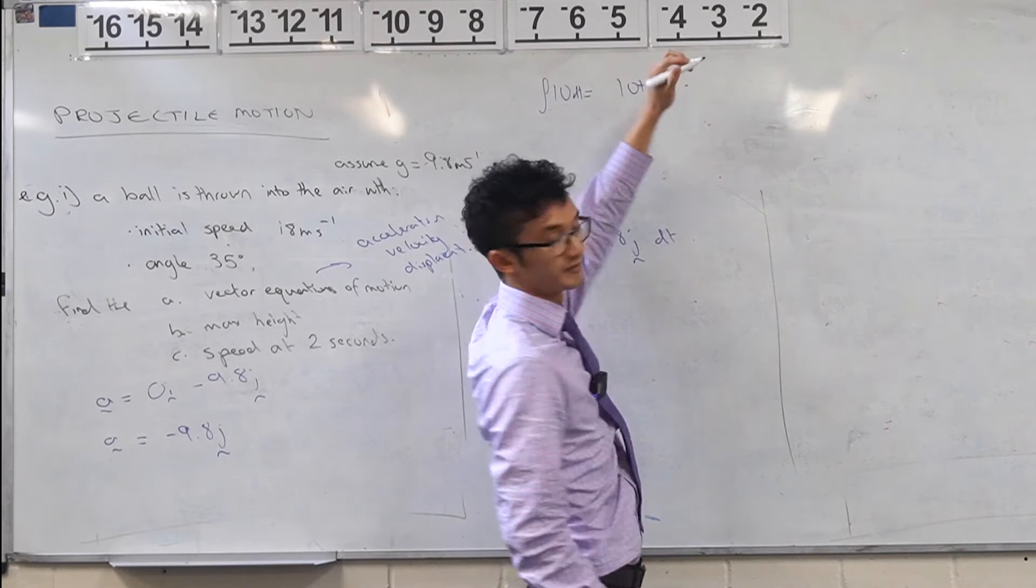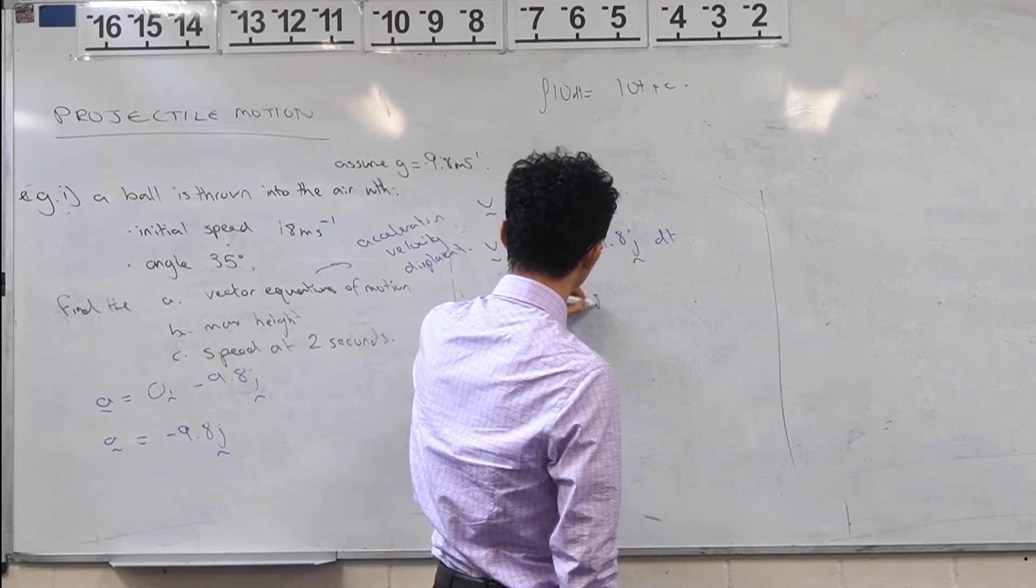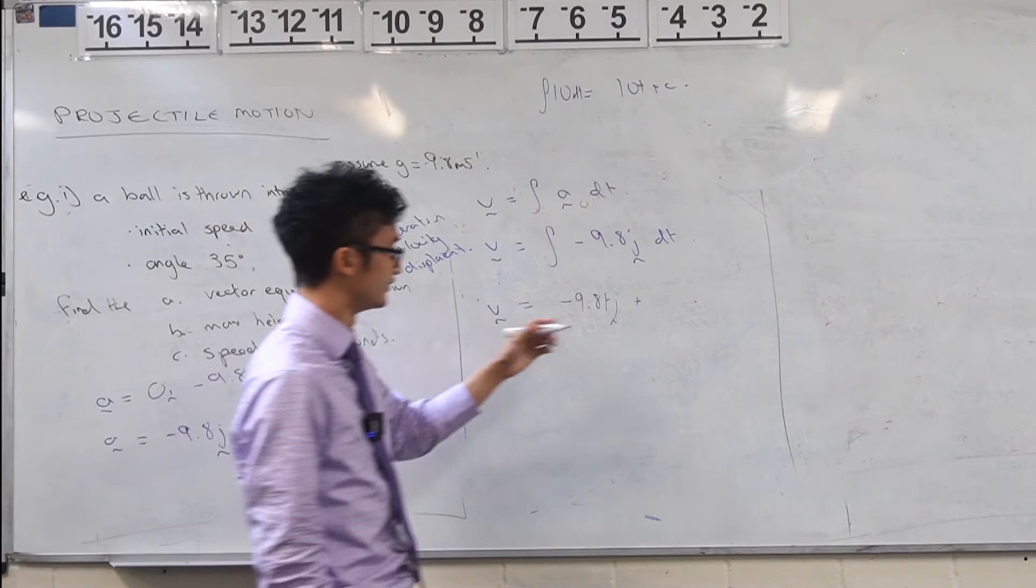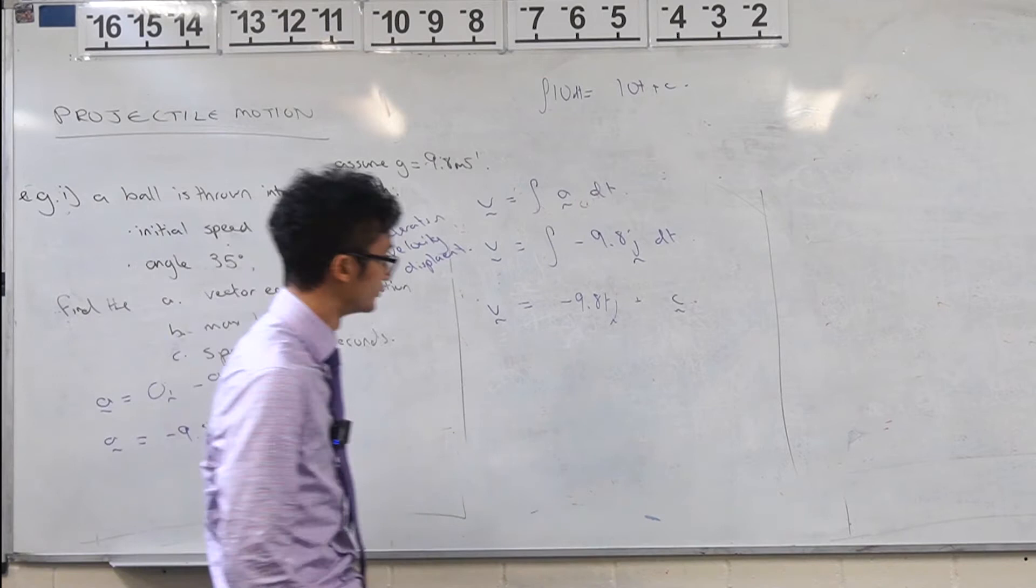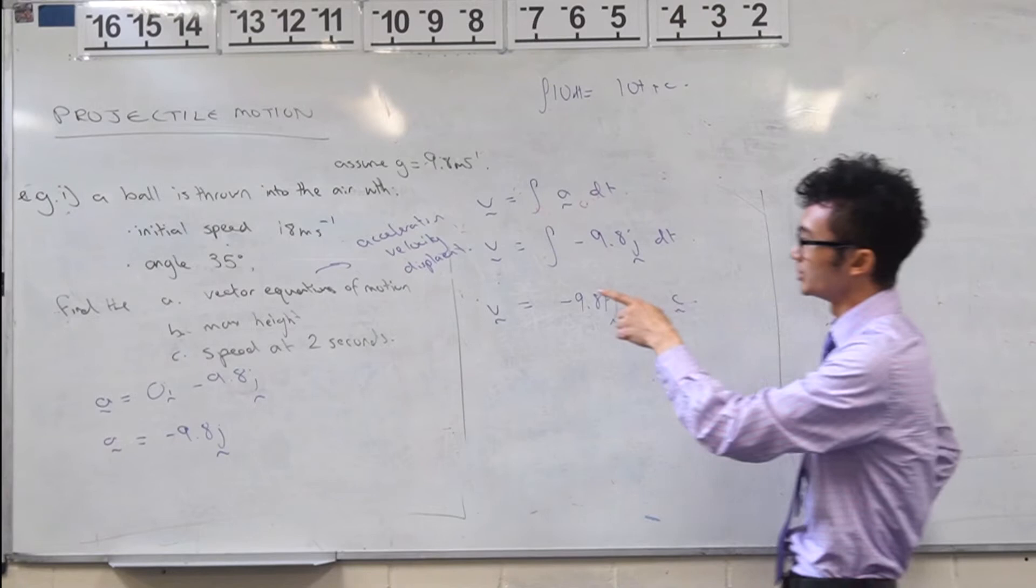So over here, same idea. So negative 9.8t j, now your constant is actually going to be a constant kind of vector. So it's going to be a different type of vector. So that's just something to keep in mind when you're doing that process. How do we find that out? Well, remember, we needed some initial conditions and we actually do have initial conditions here now. We knew that we could, and this is something you can assume.